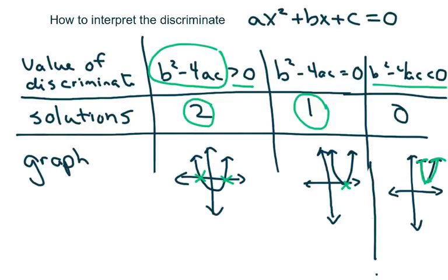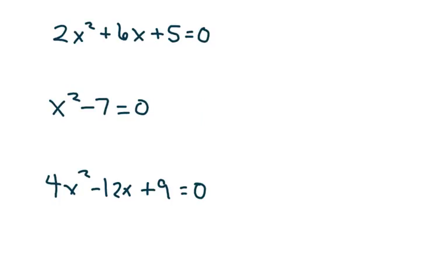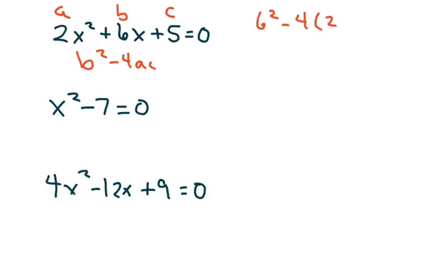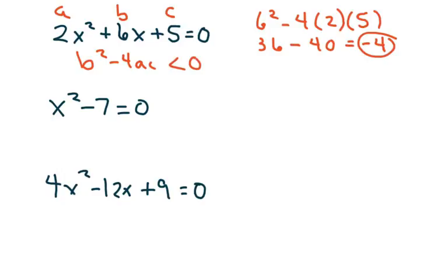Let's do some examples. Here we have this equation and we're going to compute the discriminant b² minus 4ac to see if it's positive, negative, or zero. So a, b, and c are our coefficients. b is 6, so we get 6 squared minus 4 times 2 times 5, which is 36 minus 40, giving us negative 4. Since it's negative, our discriminant is negative, meaning there are no real solutions.